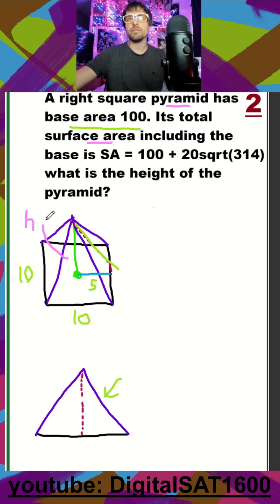So if that's 5, and this vertical length is height, well, then this slant height, we can just use Pythagorean's theorem, right?